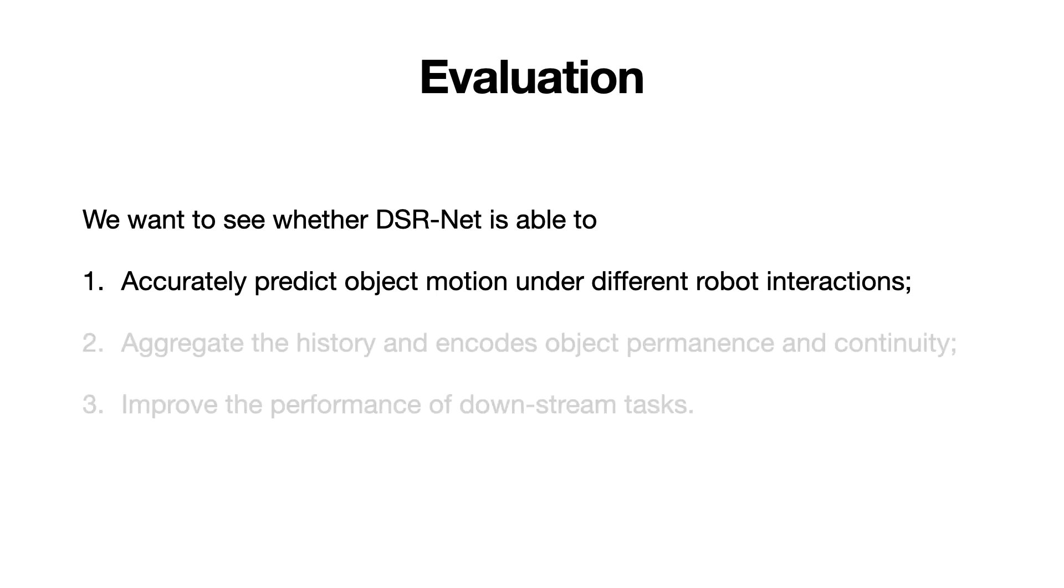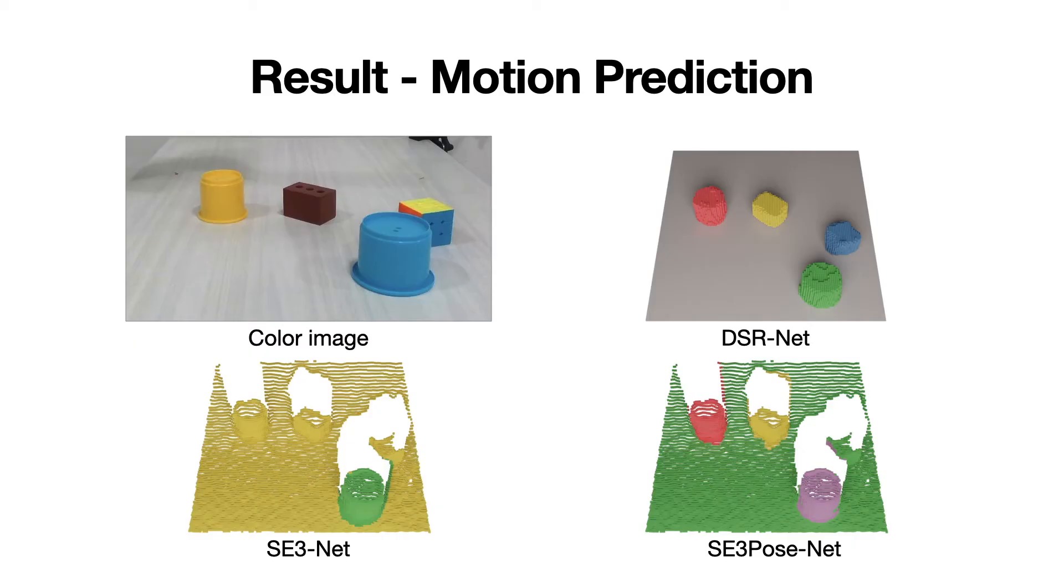First, we will evaluate the motion prediction accuracy. We compare with SE3Net and SE3POSENet. The visualization indicates that our DSRNet outputs the full 3D volume, but the two baselines are limited to visible surfaces.